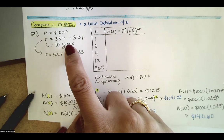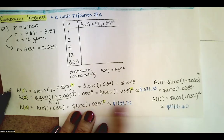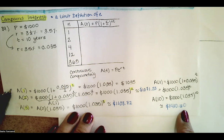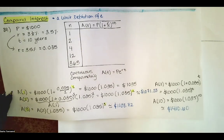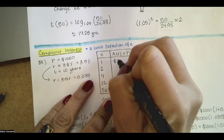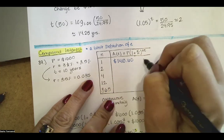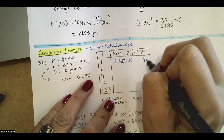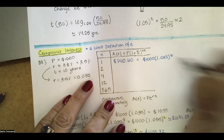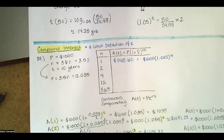Using a calculator — specifically Desmos's scientific calculator — we can compute decimal approximations. What we're asked in this table is to see how the expression changes as the number of compoundings per year changes. When n equals one, the balance for a one-thousand-dollar deposit at 3.5 percent after ten years is approximately one thousand four hundred ten dollars and sixty cents.